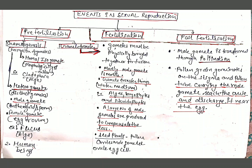Now, gamete transfer: gametes must be physically brought together for fusion. Mostly male gametes are motile; exceptions are a few fungi and algae in which both types of gametes are motile. In several simple plants like algae, bryophytes, and pteridophytes, water is the medium through which gametes are transferred. A large number of male gametes fail to reach the female gametes, so to compensate, male gametes are produced several thousand times more in number. In seed plants, pollen grains carry the male gametes and ovules carry the egg cell.